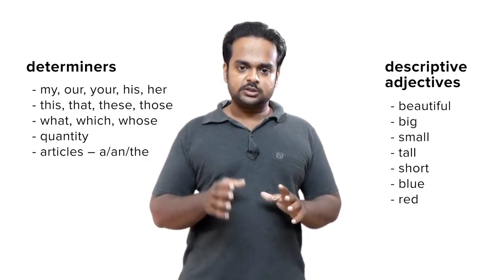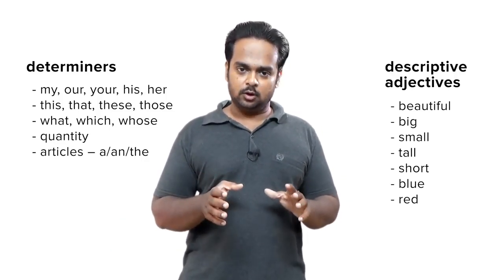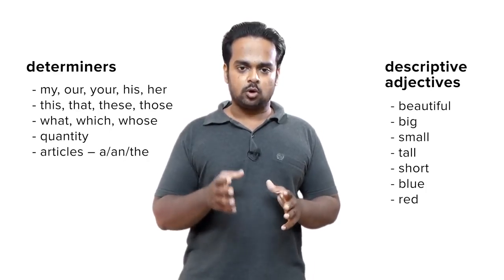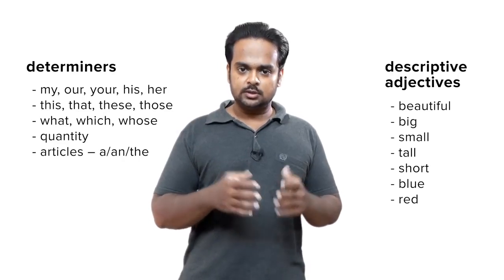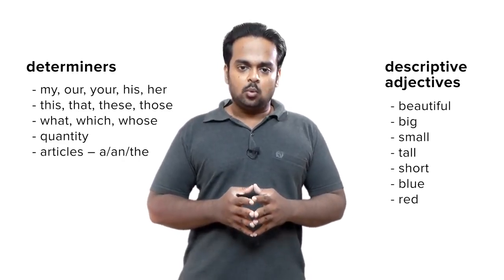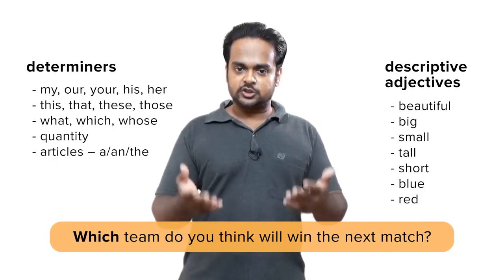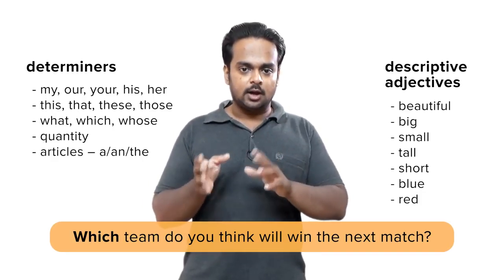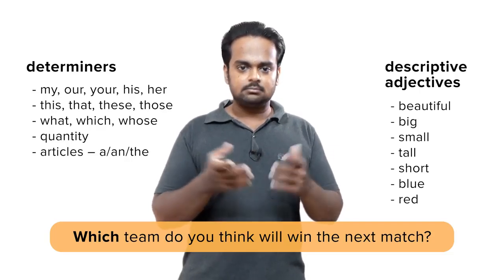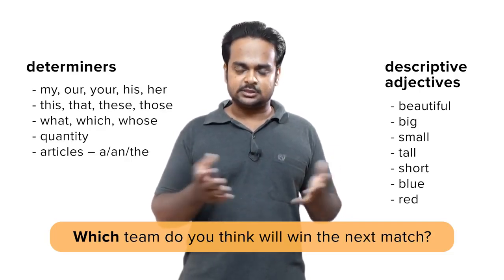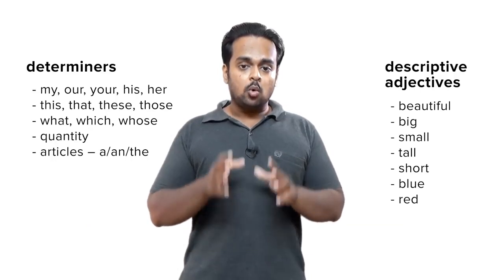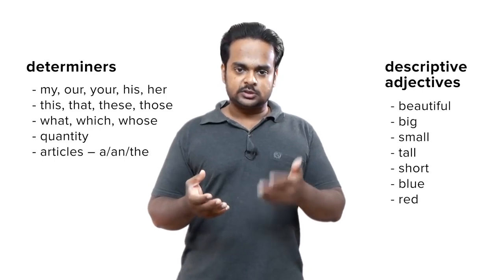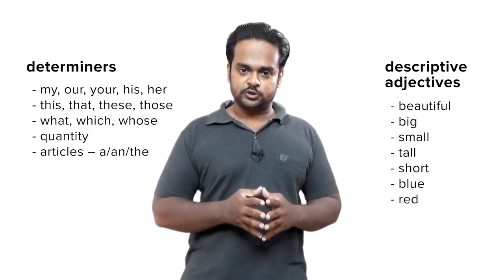In the same way, the words this, that, these, and those also act as adjectives. Also, the question words what, which, and whose can be determiners. If I asked 'which team do you think will win the next match?' the word 'which' asks for information about 'team.' Team is a noun, so 'which' is an adjective. Quantity words like numbers and quantity expressions such as a few, some, and many are determiners as well.